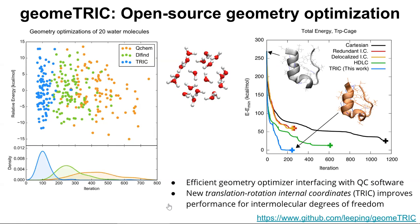GeomeTRIC itself implements several internal coordinate systems, determines internal coordinate steps, and ensures that all specified constraints are satisfied during minimization. It was written to implement a new coordinate system called translation-rotation internal coordinates (TRIC), with the design goal of being efficient at optimizing things like water clusters and supramolecular complexes. Its performance is better than several other codes and coordinate systems.